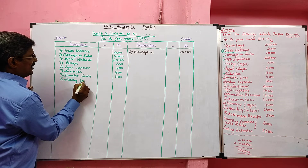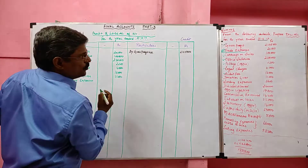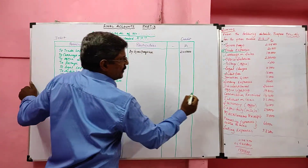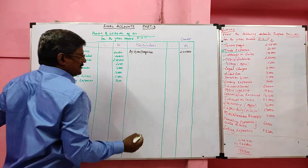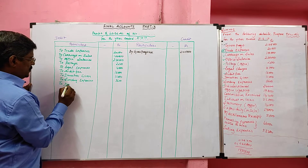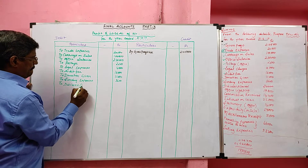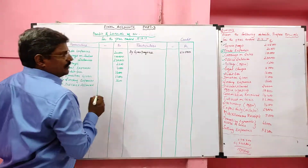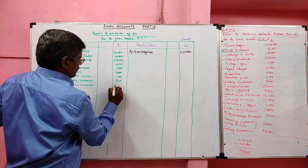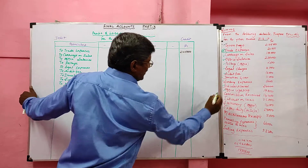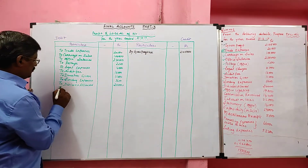Next, sundry expenses — also called miscellaneous expenses or general expenses — are debited to the profit and loss account, value 36,000 rupees. Next, discount allowed is an expense debited to the profit and loss account, value 30,000 rupees. Next, office lighting is debited to the profit and loss account, value 19,800 rupees.